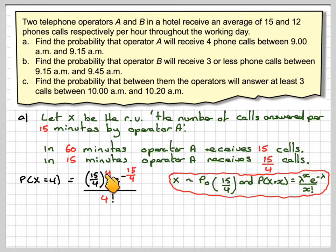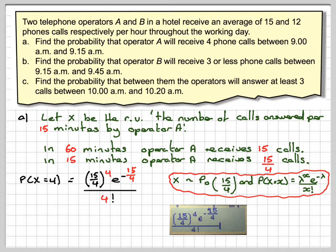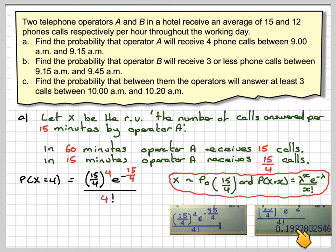So it's going to be 15 over 4 to the power of 4, e to the minus 15 over 4, over 4 factorial. You could change that to a decimal if you prefer, but it is possible to work with these new calculators in fraction mode.